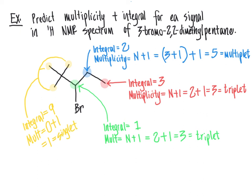So in this problem, we've gone through and assigned the multiplicity and integral for every proton signal. Multiplicity is the splitting pattern determined by how many hydrogens are vicinal to the one being measured, while the integral reflects how many hydrogens comprise that signal. Multiplicity relates to adjacent protons; integral relates to the actual protons being measured. In the upcoming videos, we will apply this information about chemical shifts, multiplicities, and integrals to solve additional practice problems and determine complete molecular structures using NMR data — much like solving a puzzle.